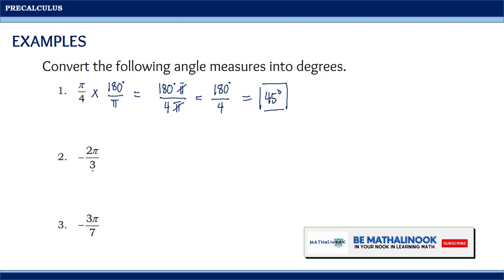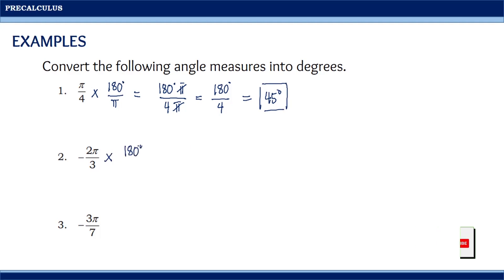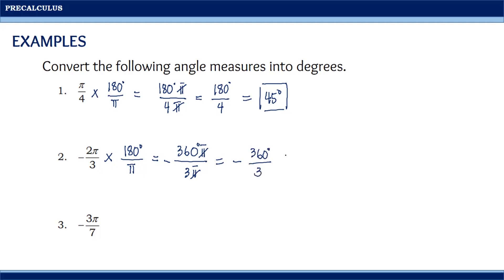For the second one, we have negative 2π over 3. Multiplying by 180 degrees over π, we get 2π times 180 degrees over 3π, which equals 360π over 3π. Do not forget the negative sign. Canceling π, we have negative 360 degrees divided by 3. Simplifying, we get negative 120 degrees. Therefore, negative 2π over 3 radians is equal to negative 120 degrees.